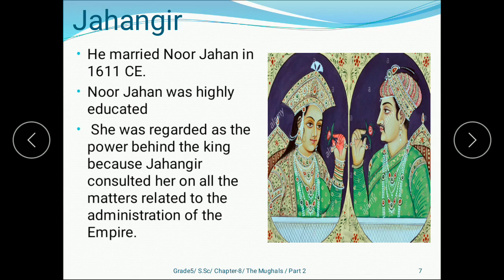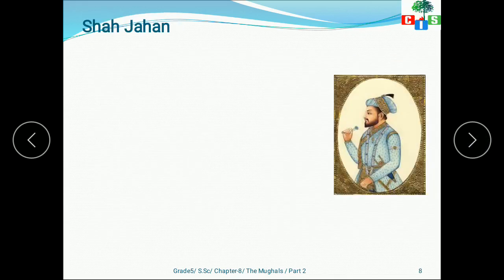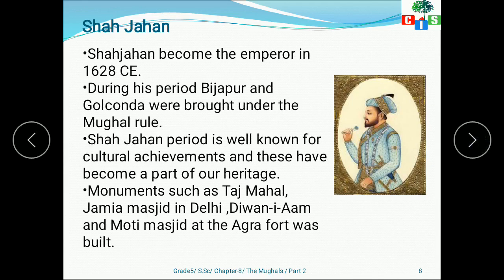After the death of Jahangir, Shah Jahan took charge of the Mughal Empire and became emperor in 1628 CE. During his period, Bijapur and Golconda were brought under Mughal rule. Shah Jahan's period is well known for cultural achievement — underline and remember this. These achievements have become a part of our heritage. Shah Jahan built many famous monuments such as the Taj Mahal in Agra, the Jama Masjid in Delhi, and the Diwan-e-Aam and Moti Masjid at the Agra Fort.